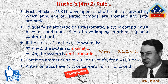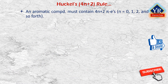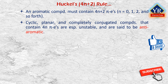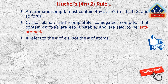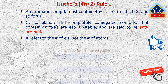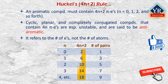The 4n+2 rule predicts that cyclic pi systems having 2, 6, and 14 pi electrons will be unusually stable, i.e., they will be aromatic. An aromatic compound must contain 4n+2 pi electrons. Cyclic, planar, and completely conjugated compounds that contain 4n pi electrons are especially unstable and are said to be anti-aromatic compounds. Hückel's rule refers to the number of electrons, not the number of atoms in a particular ring. Thus, compounds containing 2, 6, 10, 14, 18, and so forth pi electrons are aromatic, as shown in the table.